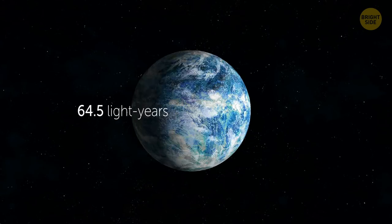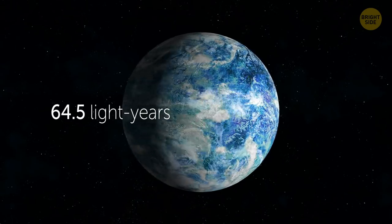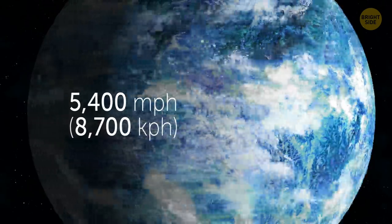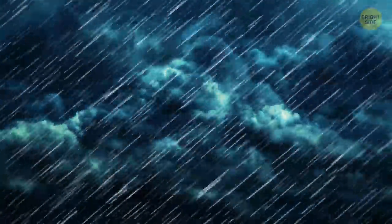There's a planet 64 and a half light years away from our solar system with a bright blue color and some shady weather. The winds there travel at 5,400 miles per hour and it rains glass. No thanks, I'd rather go to Hawaii.